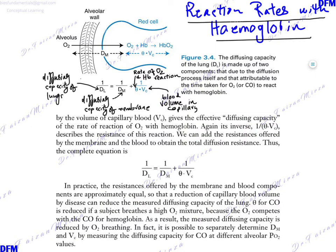The rate of reaction with hemoglobin is important because the diffusing capacity of lung is made up of two components. The first is the diffusion process itself that the gas must diffuse. And the second is basically that gas, either oxygen or carbon monoxide, reacting with hemoglobin.